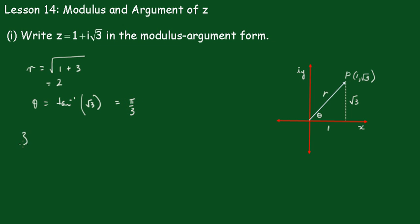So, z will be equal to 2, cos pi upon 3, plus i sin pi upon 3. Or, if you like, in the abbreviated form, 2 cis pi upon 3.